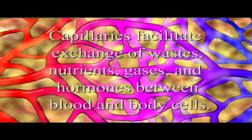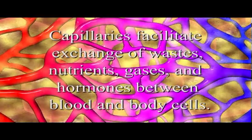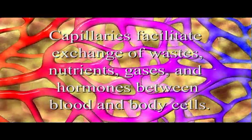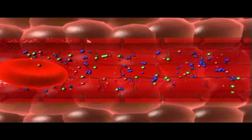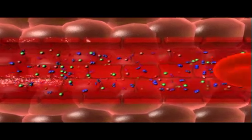This exchange occurs at the level of the tiniest blood vessels, capillaries, where wastes, nutrients, gases, and hormones are exchanged between the blood and the body cells. With walls only a single cell thick, capillaries are well adapted to their role of exchange.